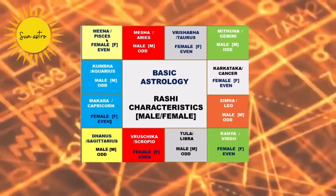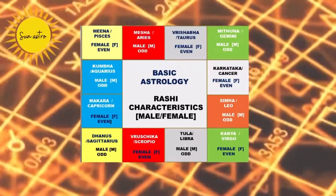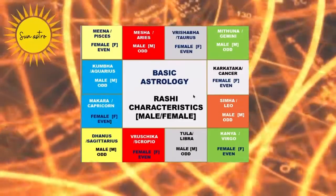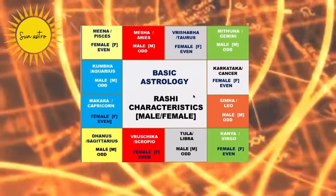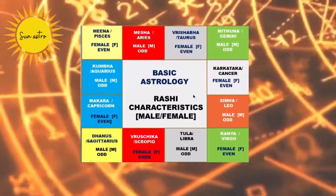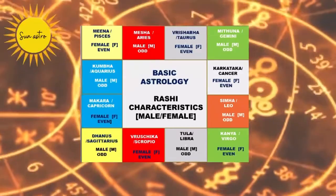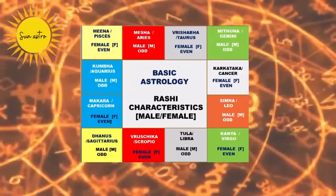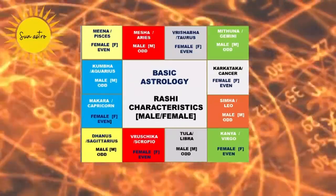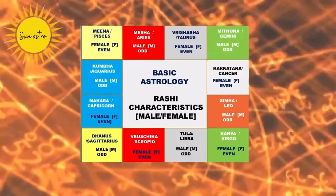Based on this, our body parts are considered, which will be explained in future videos. While considering the individual horoscope, we have to consider the first house from our Lagna, which was explained in my earlier video.